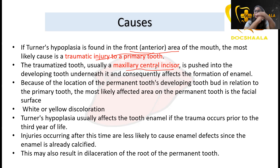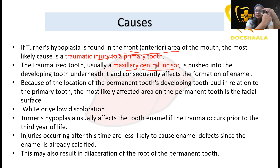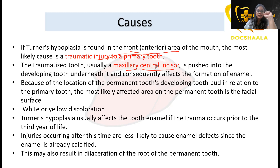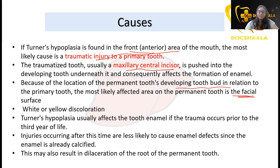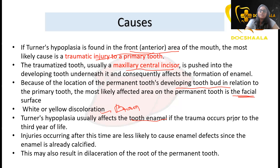The traumatized tooth is usually a maxillary central incisor. When trauma occurs, the tooth is pushed deeper into the socket, affecting the formation of enamel in the permanent tooth developing underneath. Because of the location of the developing tooth bud relative to the primary tooth, the facial surface of the permanent tooth is most likely affected, showing white, yellow, or brown discoloration.